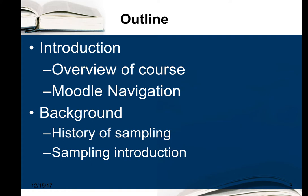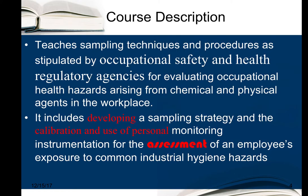This short lecture will cover an introduction, how to navigate Moodle, and then give you a brief background to sampling. This course teaches techniques and procedures as stipulated by safety and health regulations and regulatory agencies for the evaluation of occupational safety and health hazards arising from both physical and chemical agents. It includes developing a sampling strategy and calibration of personal monitoring equipment, as well as the use of different types of instrumentation for assessing employees' overall exposure to workplace contaminants.